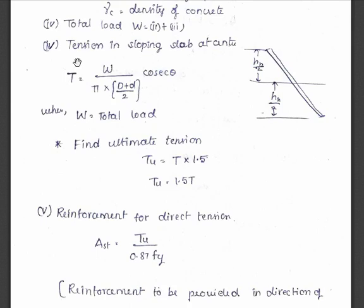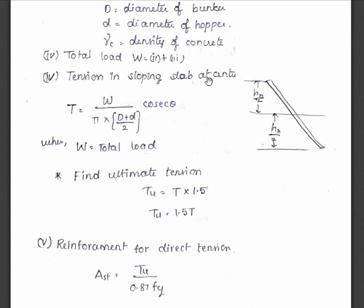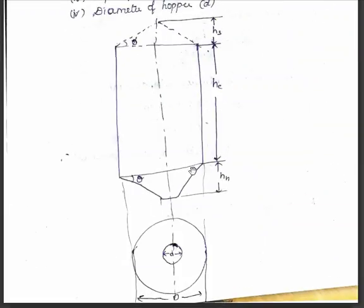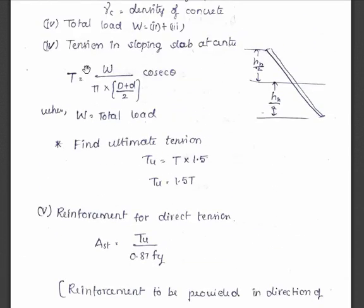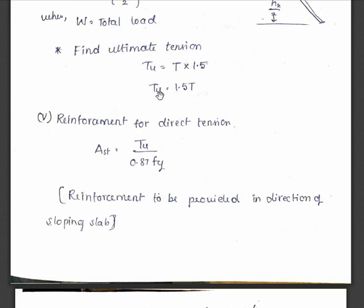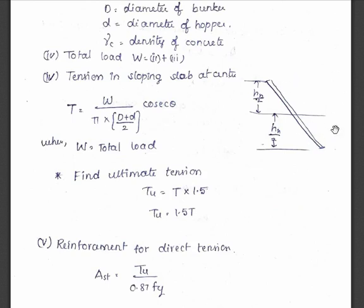The tension in the sloping slab at the center: the formula is W divided by pi into the mean diameter (capital D plus small D by 2) into cosecant theta. We are talking about the central portion where tension is greatest. W is the total load. The ultimate tension is obtained by multiplying the tension value by the factor of safety 1.5. The reinforcement is then AST equals ultimate tension divided by 0.87 Fy, to be provided in the direction of the sloping slab.